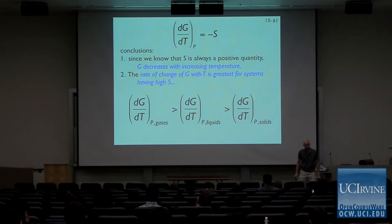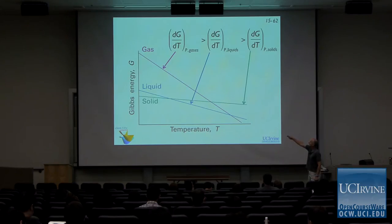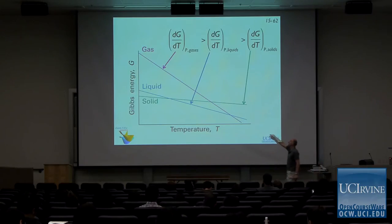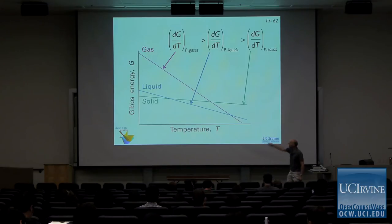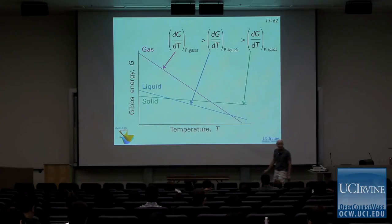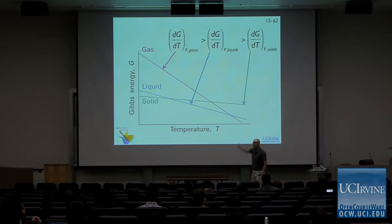This plot is right out of Chapter 16. Gas has the biggest slope. Here's the Gibbs energy on the vertical axis, temperature on the horizontal — it's going down for every one of these phases, but at a rate that depends on the state. Gases show the largest decrease in Gibbs energy with temperature, liquids next, solids show the least. One surprising thing is that the Gibbs energy goes down with temperature — it's an unusual energy that goes down with temperature.